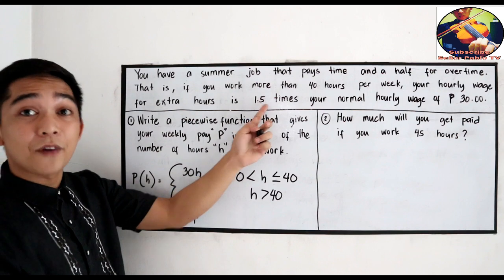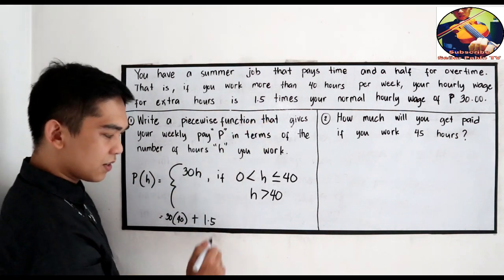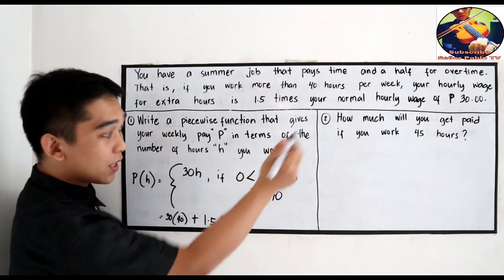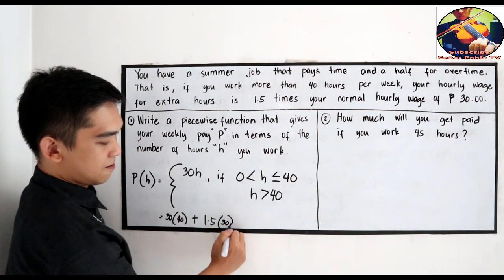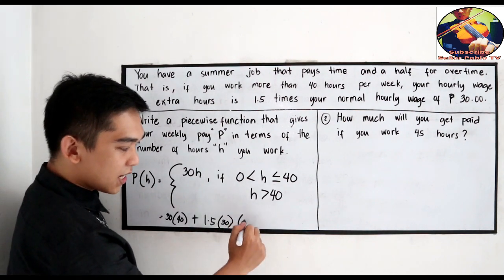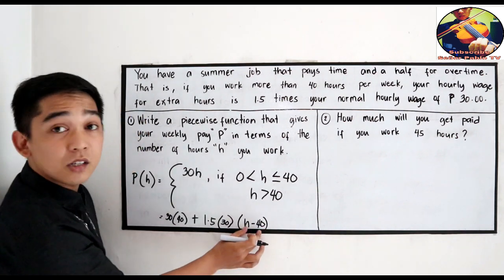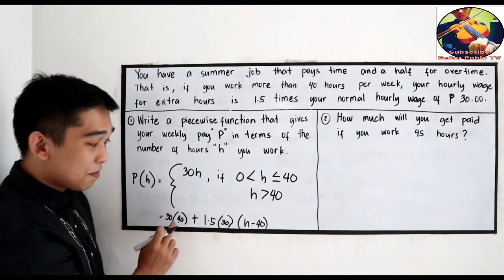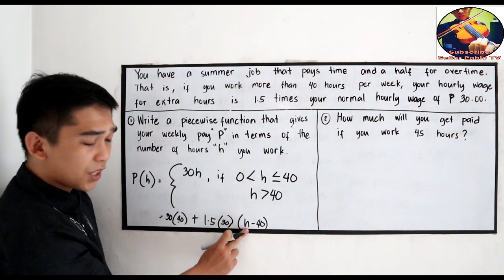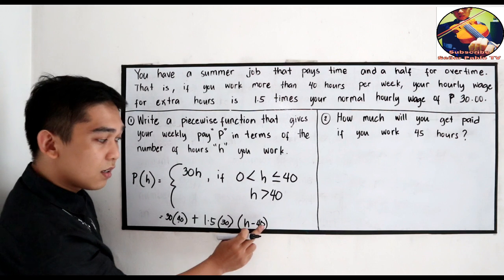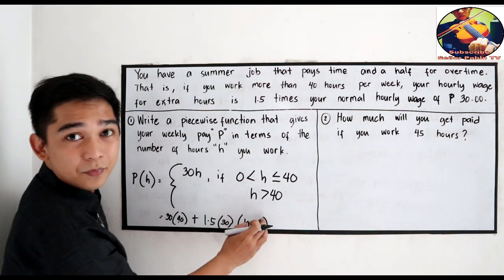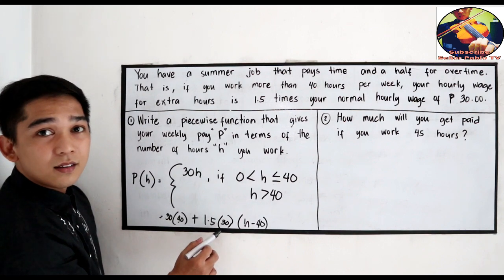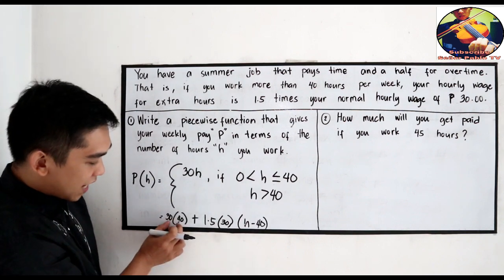We have 30 times, let's say you worked 40, then add the overtime. But we have a condition for overtime: 1.5 times the hourly wage times, what will the hourly wage be? 30. Then multiply that by the quantity h minus 40. Why h minus 40? The hours minus 40 are already paid here, so we need to subtract it because the h minus 40 is already paid. Let's say you worked 48, so 48 minus 40, 8 hours is your overtime. This is what it means.